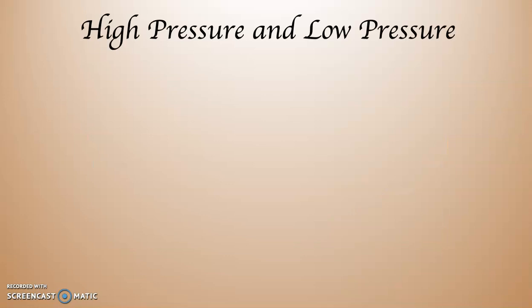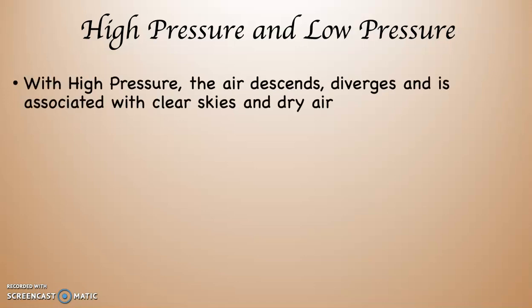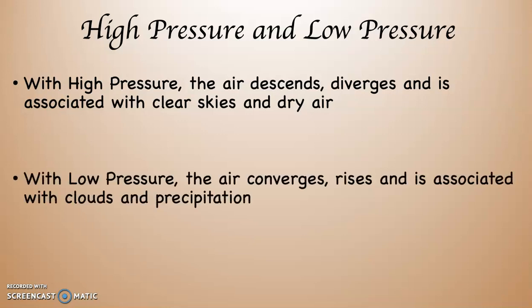With high pressure, the air in the atmosphere descends, which means it flows downward and it diverges. High pressure is associated with clear skies and dry air. Southern California is dominated throughout most of the year with high pressure — this is the reason we have such a very dry climate. In a low pressure system, the air converges, meaning it comes together and it rises. This converging, rising air is associated with making clouds, and clouds of course are associated with making precipitation. Those are the fundamental mechanics of the monsoons: high pressure and low pressure.